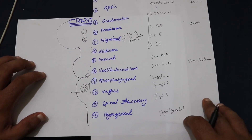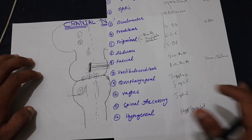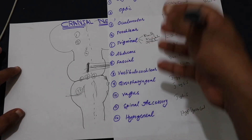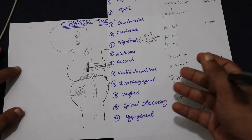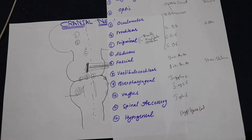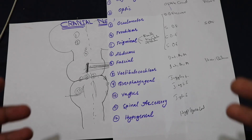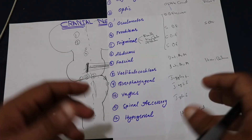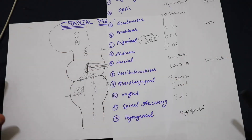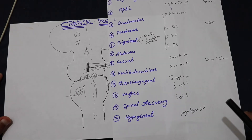This is the introductory lecture on the cranial nerves. Hope you got a basic idea of how many nerves there are, where they arise from, and what their main functions are. We'll be coming with a detailed lecture in which we will explain every detail. Thank you for watching, and keep visiting Taiju Schooling.